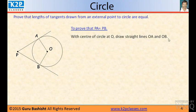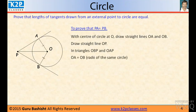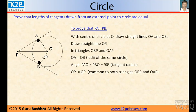With center of circle at O, draw a straight line OA and OB. Draw a straight line OP. In right angle triangles OBP and OAP, OA equal to OB because both have radius of the circle. Angle A equal to angle B, 90 from the previous theorem because radius makes 90 degree angle on tangent. And OP equal to OP because OP is the common line between two triangles.